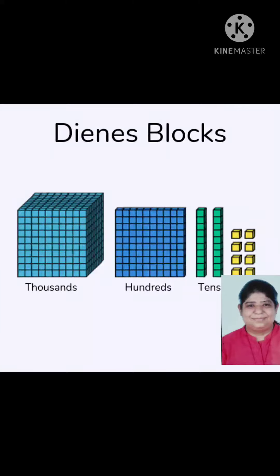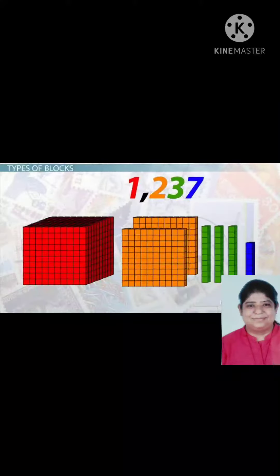In the given example, 1000 block is there, 100 block, 2 tens blocks, and 8 ones blocks are there. So what will be the answer? 1128.